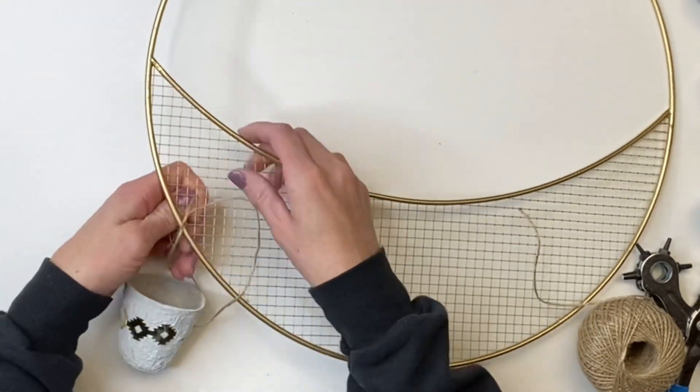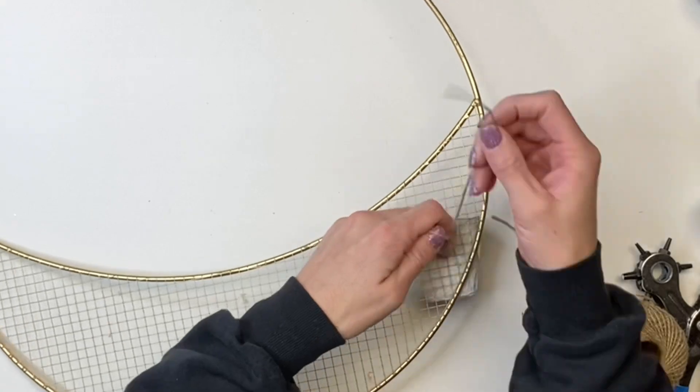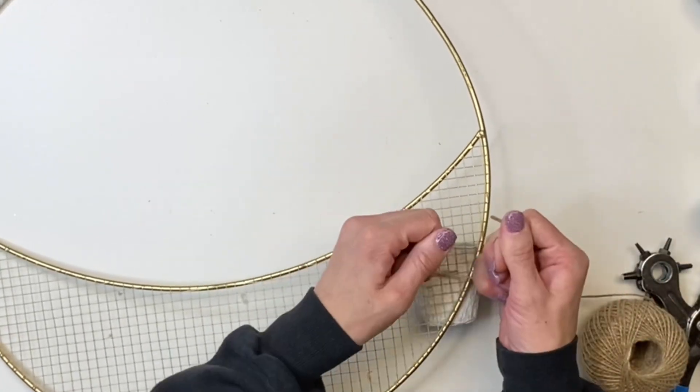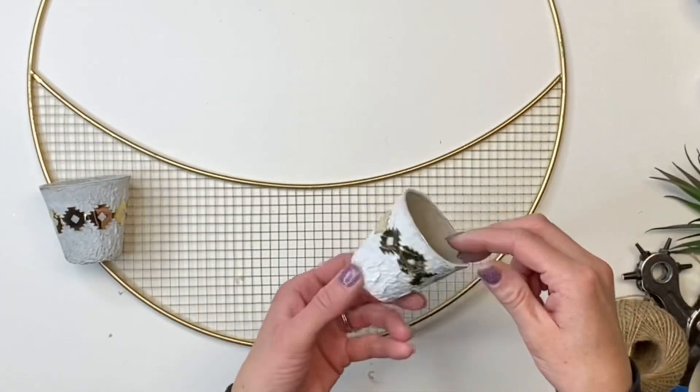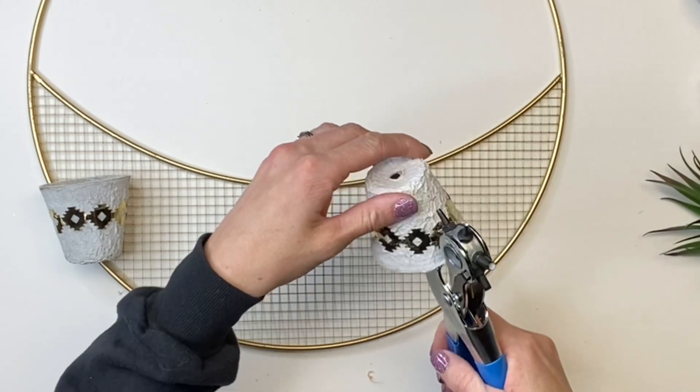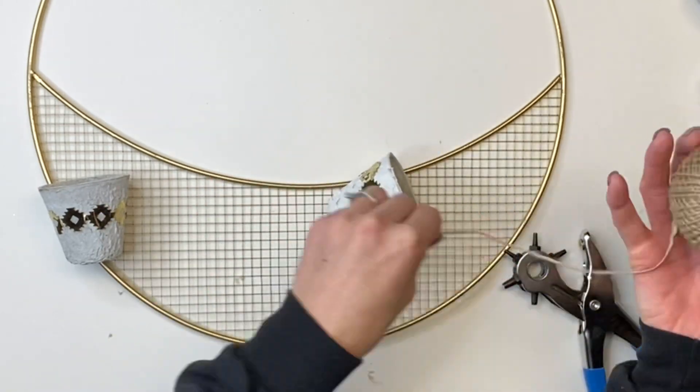And then I'm going to attach the pot to the wreath form here. And I started with putting one on the left side, and then I'm going to put this one on the right side.